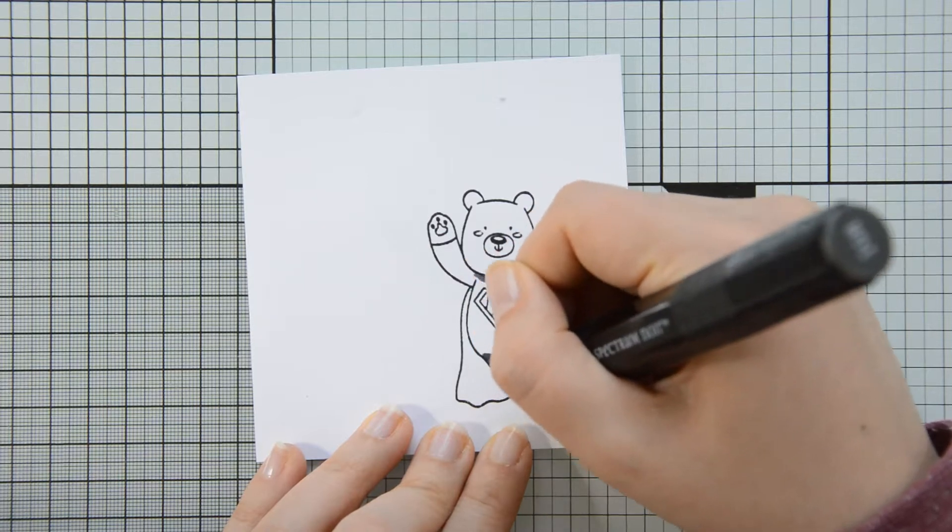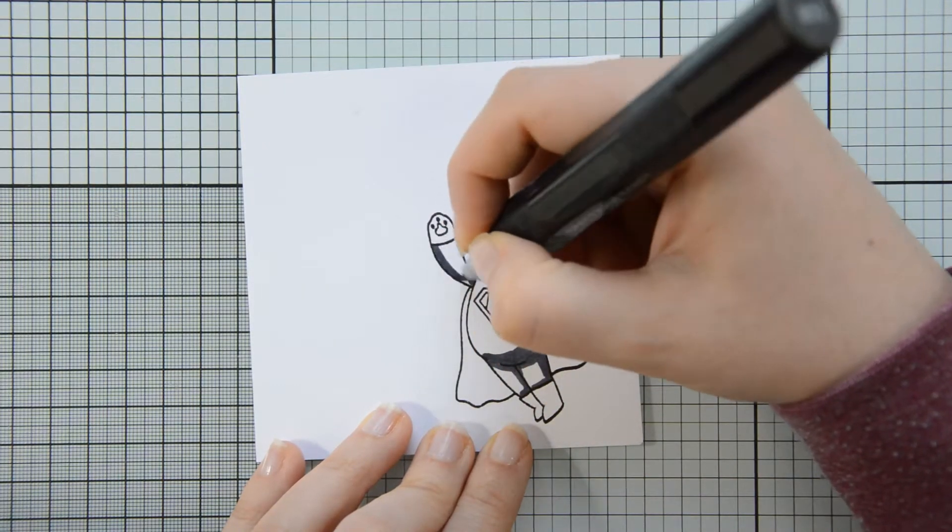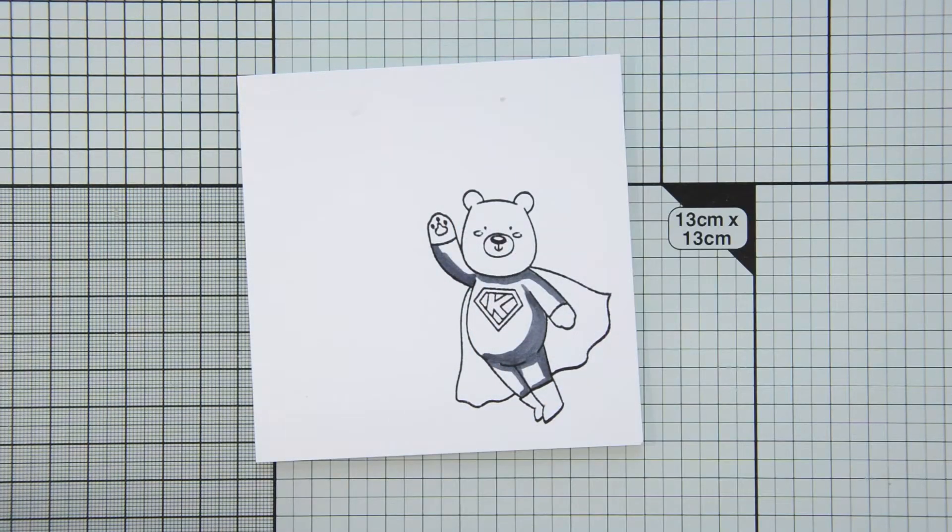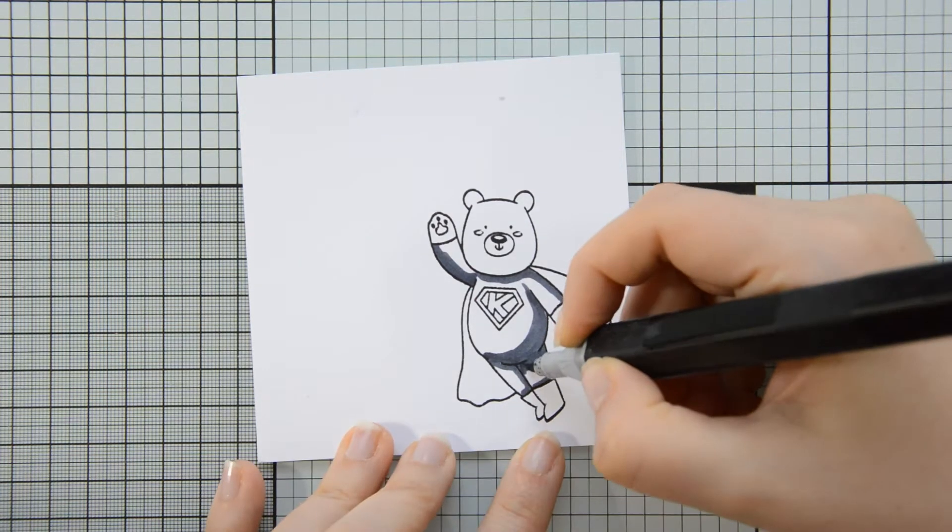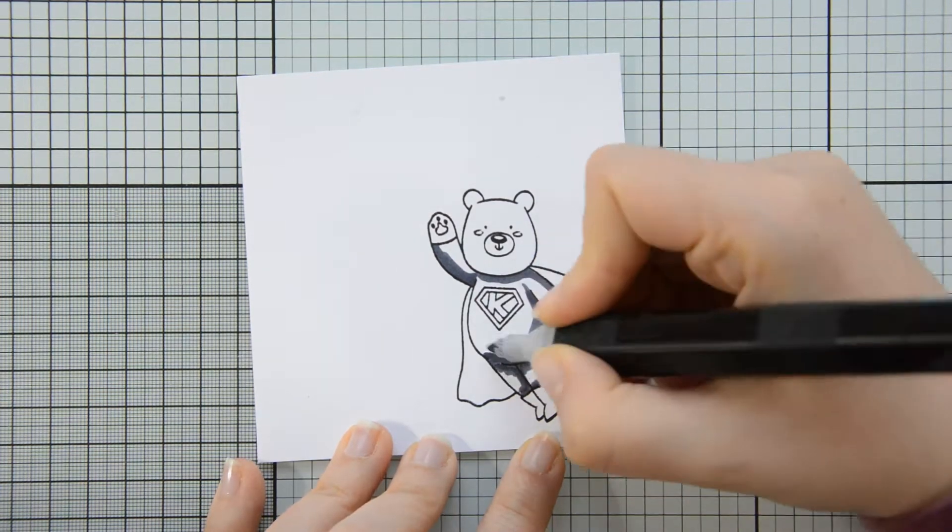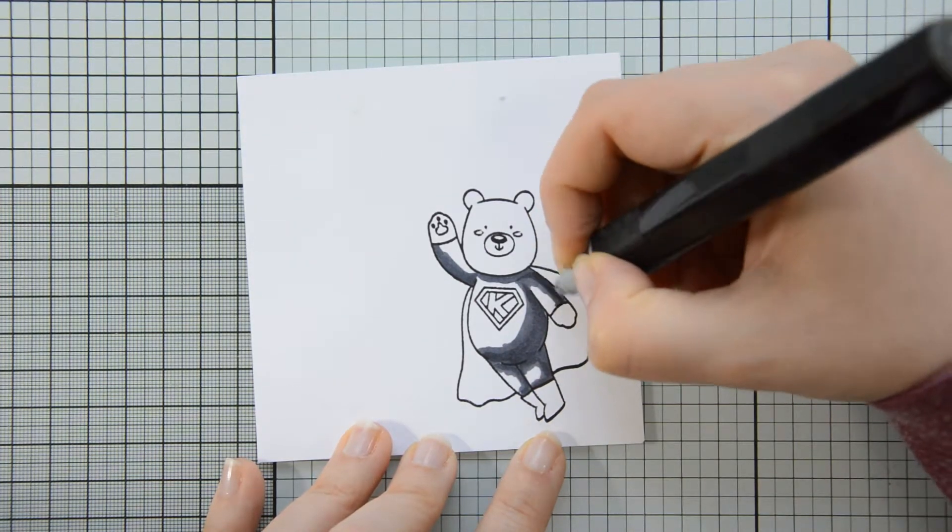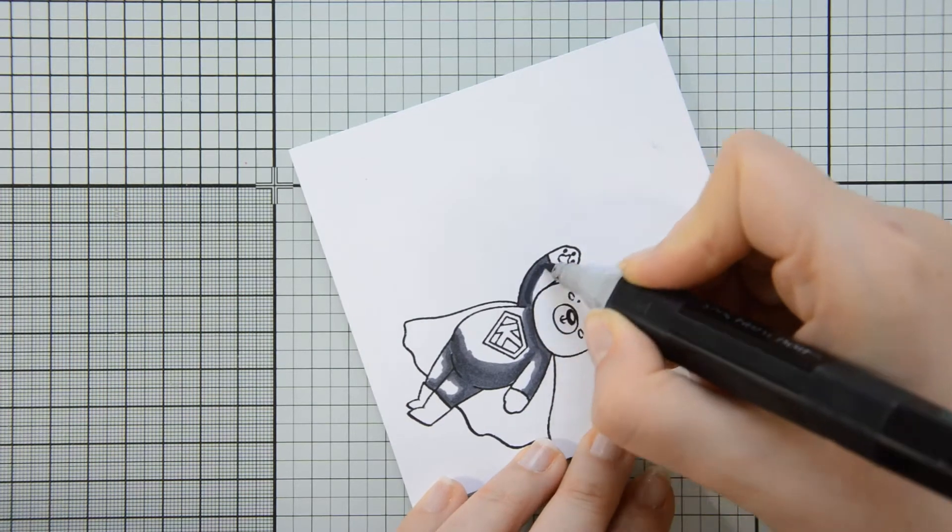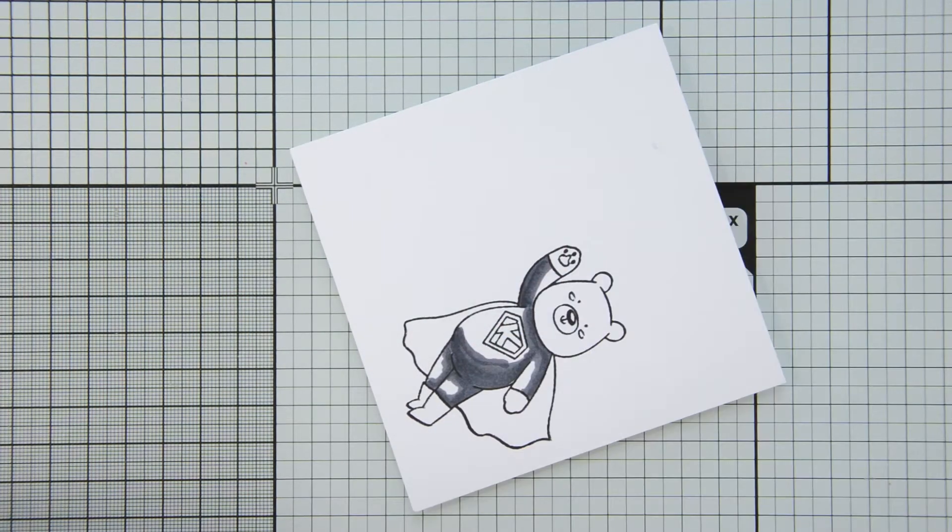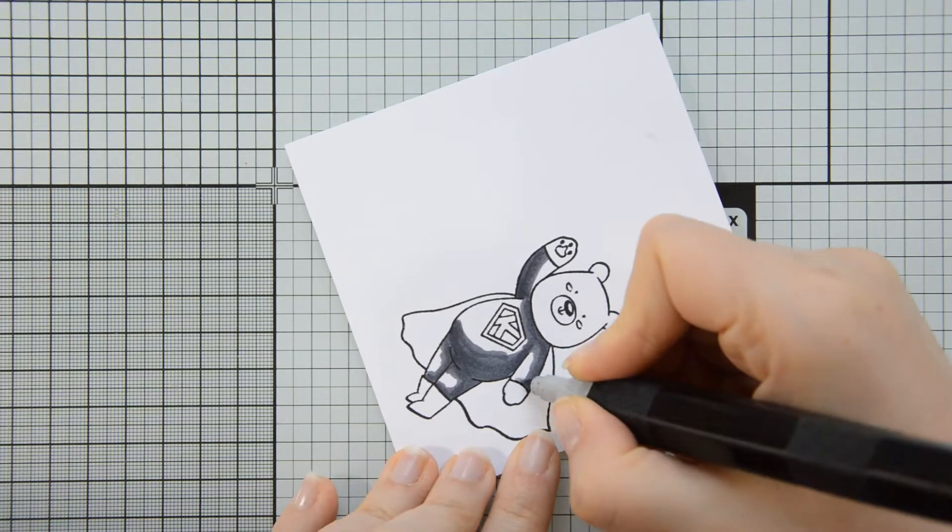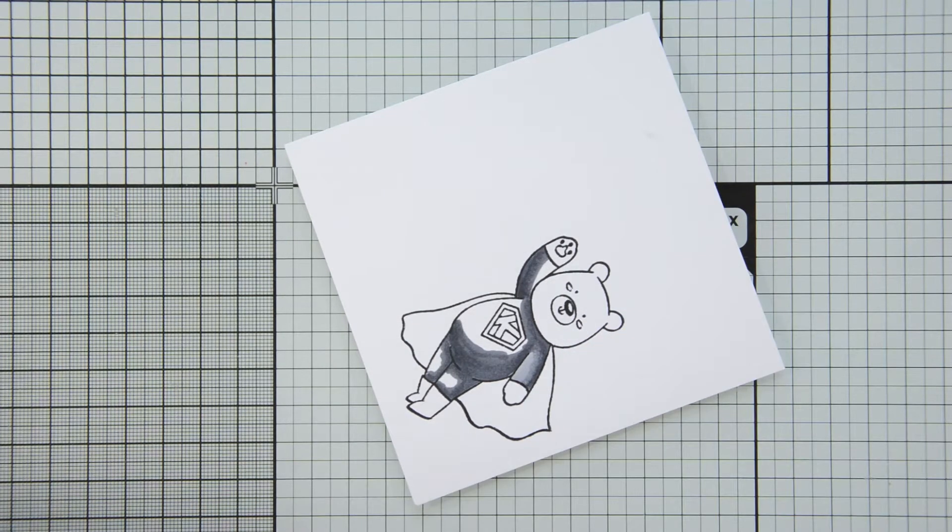I did some simple 3 marker shading today. Right now I am adding shadows to Kobe's costume using my IG8 marker, a cool grey marker, because I want the costume to look black. I will then blend that out with the IG6 marker, and I left some space for the highlights that I will be filling in with my IG4 marker.